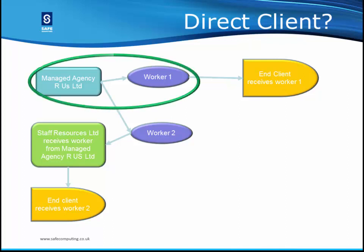The end agency would need to obtain information from the managed agency or umbrella company to obtain the worker's status. In the example illustrated, managed agency RS Ltd would only need to report Worker 1 on their report — where the worker was not PAYE of course — as Worker 1 worked directly at an end client organised by the managed agency.